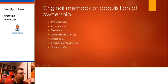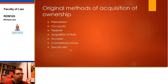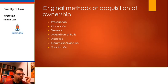So, original methods of acquisition of ownership — there are several and we'll discuss each in turn. To start off: Prescription, Occupatio, the Finding of Treasure, Acquisition of Fruits, Accessio, Commixtio and Confusio, and Specificatio. This looks like a lot, but the concepts are simple and you only need to understand the broad principles.